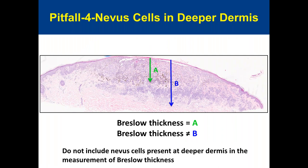Pitfall 4: melanoma associated with a benign nevus component. When the nevus component is present deeper in the dermis than the melanoma cells, be careful — measure only the melanoma component. Do not include the nevus component. The correct measurement is A, not B.